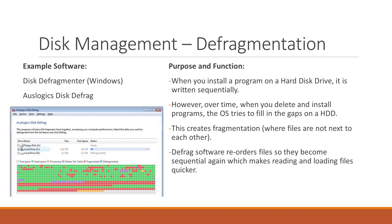Our next utility is the disk defragmentation utility software. When you install a program on a hard disk drive, it is written sequentially — one instruction after another. However, over time, when you delete and install programs, the operating system tries to fill the gaps on the hard disk drive, creating fragmentation where files are not next to each other. Defragmentation software reorders these files so they become sequential again, meaning your computer can read files much quicker and loading times are reduced.